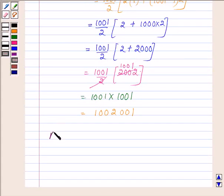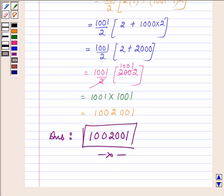Hence, the sum of all the odd integers from 1 to 2001 is 1,002,001. So this completes the session. Hope you enjoyed it. Take care and have a good day.